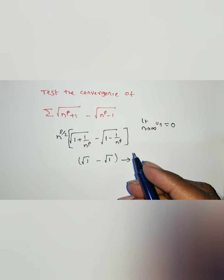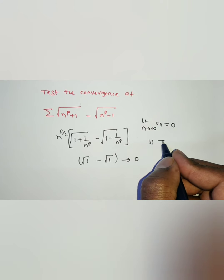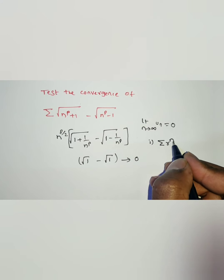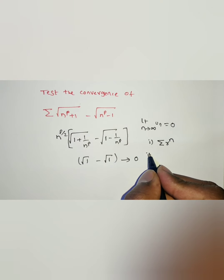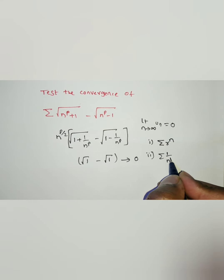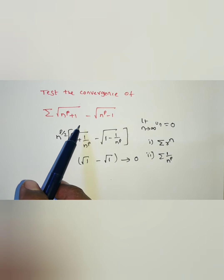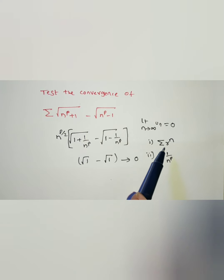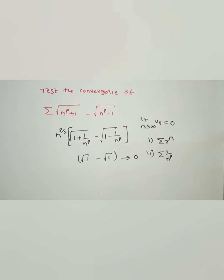So it may be convergent or divergent. How to test convergence or divergence: first, is the given series in the form of summation r to the power of n? No. Next, is the given series directly in the form of summation 1 by n to the power of p? No. So we cannot apply the geometric series test, we cannot apply the p-series test. So go for the limit comparison test.